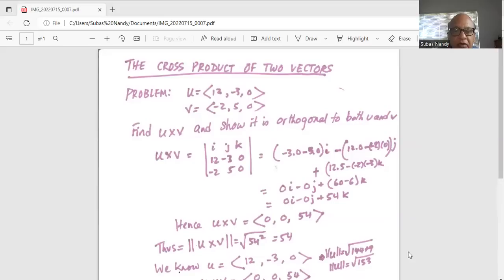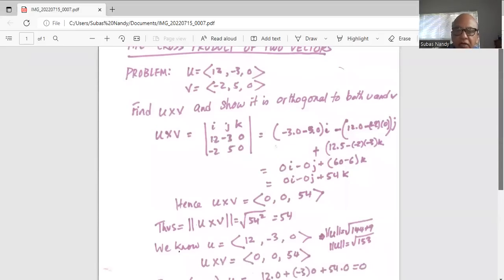So we have 0i minus 0j plus 54k is u cross v. So the directional numbers are 0, 0, and 54. And magnitude of the vector u cross v is square root of 54 squared is 54.